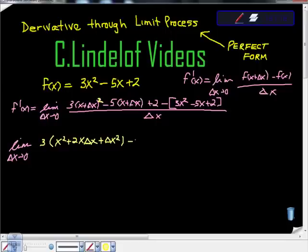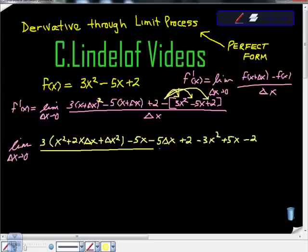Then distribute this 5 in. So negative 5x minus 5 changes of x plus 2. Then I'm going to distribute this in here. Negative 3x squared. Distribute this here plus 5x. Distribute this here. Negative 2. All over change of x.